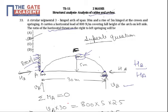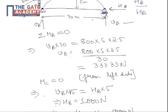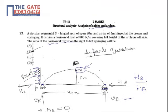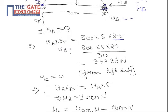Summation of MA equal to zero gives VB into 30, because 30 is span of the arch, equal to 800 into 5. 800 N per meter acting along 5 meter into distance of action of centroid of this 800 N per meter force. So, 800 into 5 into 2.5 gives VB or vertical reaction at B as 333.33 N.